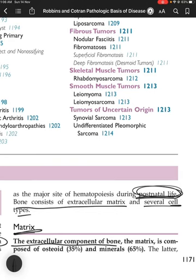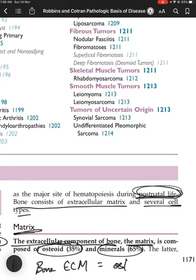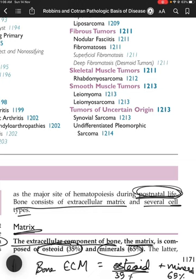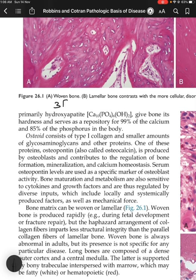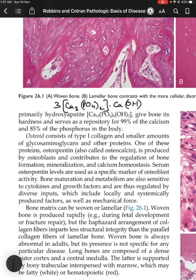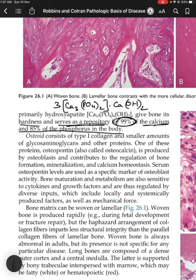The extracellular matrix of bone is composed of osteoid and minerals. Osteoid is the basic structural framework, and mineralization completes it. 35% is osteoid and 65% is minerals, primarily hydroxyapatite — Ca3(PO4)2·Ca(OH)2 — which gives bone its hardness and serves as a repository for 99% of the calcium and 85% of the phosphorus in the body.